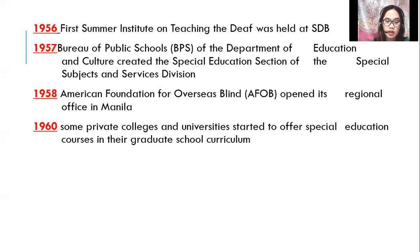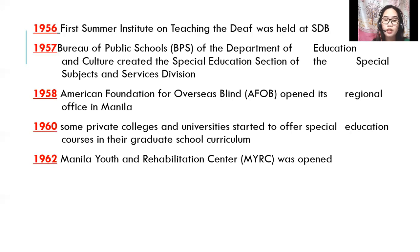During 1960, some private colleges and universities started to offer special education courses in their graduate school curriculum. In 1962, the Manila Youth and Rehabilitation Center, or MYRC, was opened. The center extended services to children and youth who were emotionally disturbed and socially maladjusted.